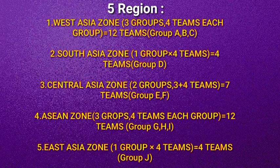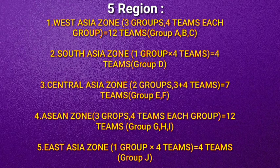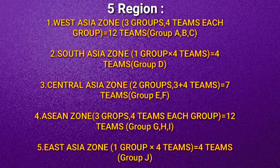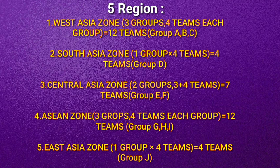Now we have entered the group stage of AFC Cup. From West Asia zone there will be three groups — Group A, Group B, and Group C — with four teams in each group, making 12 teams from West Asia zone. From South Asia zone there will be one group with four teams, that is Group D. Then from Central Asia zone there will be two groups — Group E and Group F — with three teams from Group E and four from Group F, making seven teams from Central Asia zone.